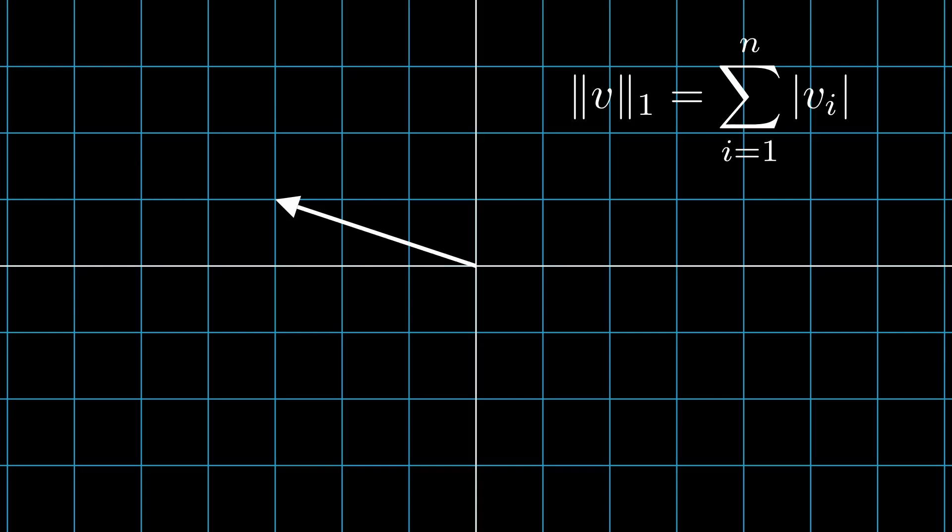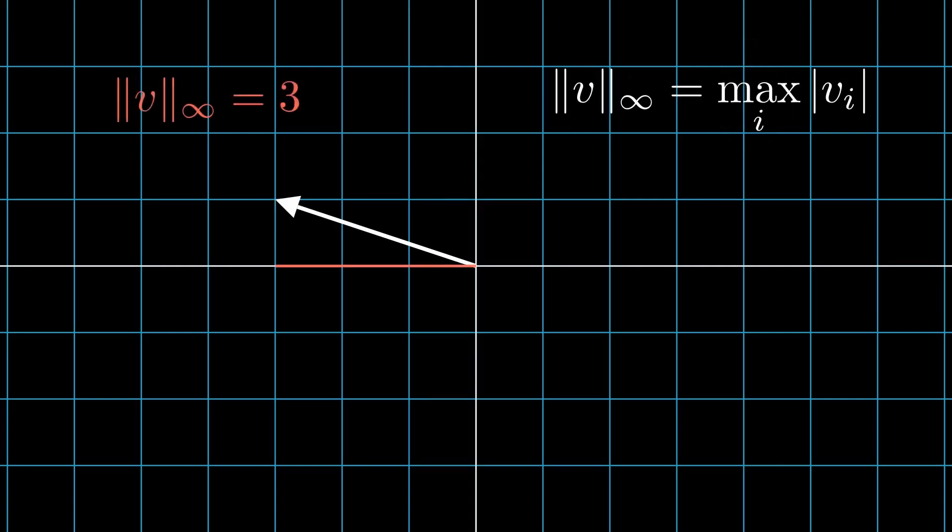Instead, we could sum all of the absolute values. This is the distance of the origin to the endpoint if we are only allowed to travel parallel to one of the axes. We call this the taxicab norm. Yet another way to assign size is by associating to each vector the maximum of the absolute values of its components.